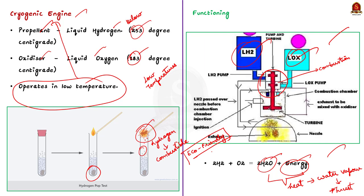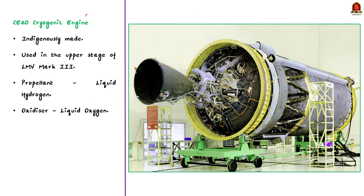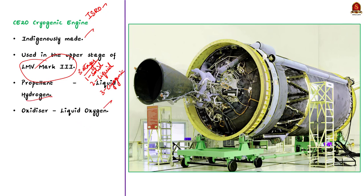CE-20 is an indigenously developed cryogenic engine used in LMV Mark III. The LMV3 has three stages: a solid first stage, a liquid second stage, and a cryogenic third stage. The CE-20 cryogenic engine is used in the upper stage of LMV MK3 and uses liquid hydrogen as fuel and liquid oxygen as oxidizer. These kinds of topics are very important for your prelims exam.